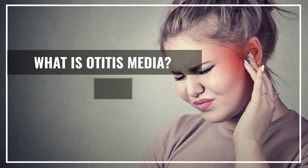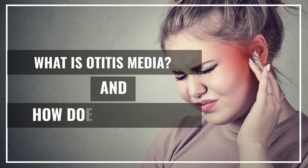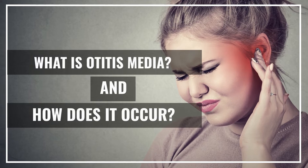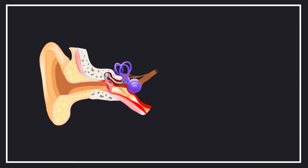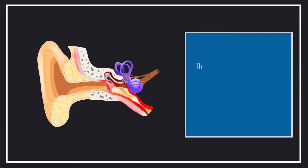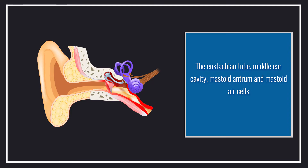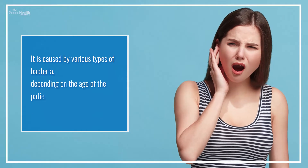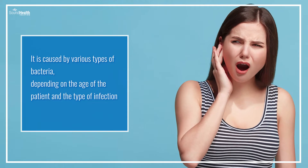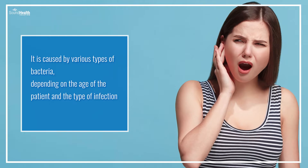So what is Otitis Media and how does it occur? Otitis Media is an inflammation of the middle ear cleft — that is, the eustachian tube, middle ear cavity, mastoid antrum, and mastoid air cells. It is caused by various types of bacteria, depending on the age of the patient and the type of infection.